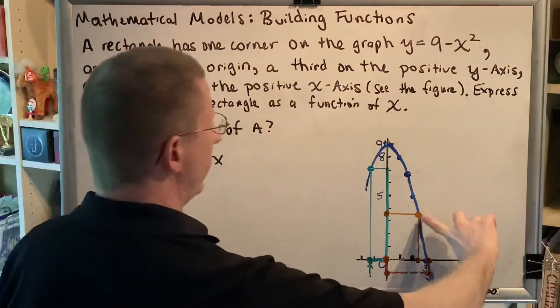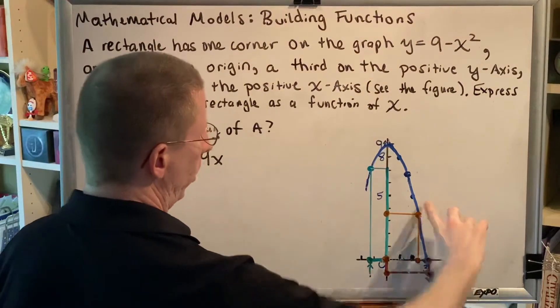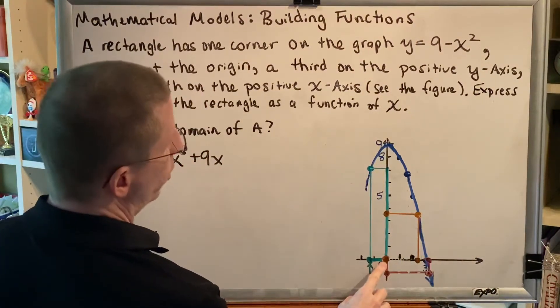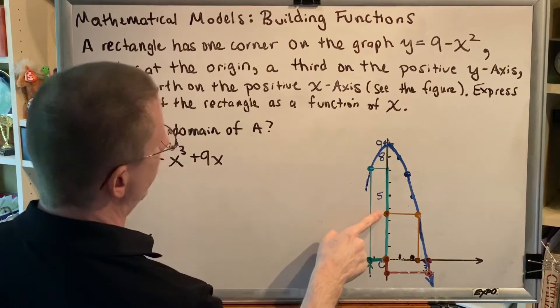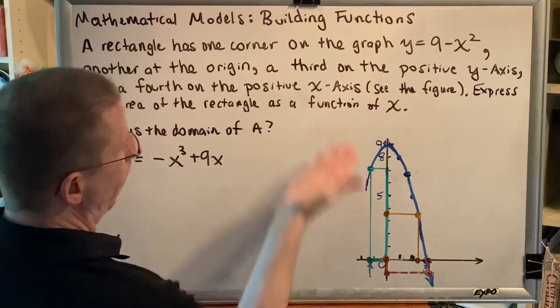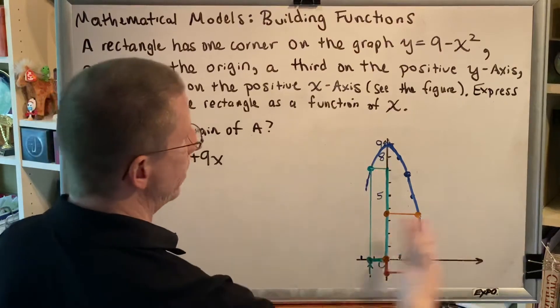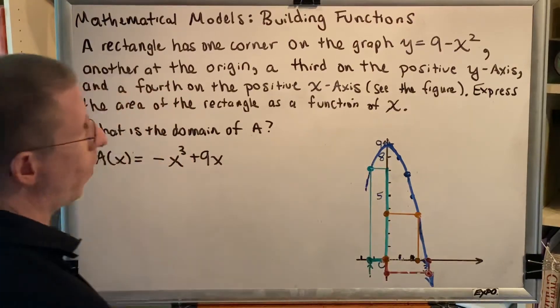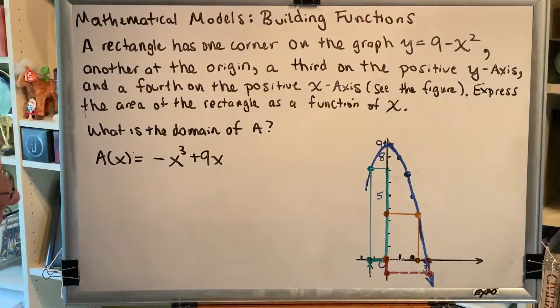The answer is yes. The upper right-hand corner is sitting on the blue curve on the parabola. The lower left corner is the origin. This point is on the positive y-axis, it's up. And this point is on the positive x-axis, it's right. So the orange rectangle is acceptable.